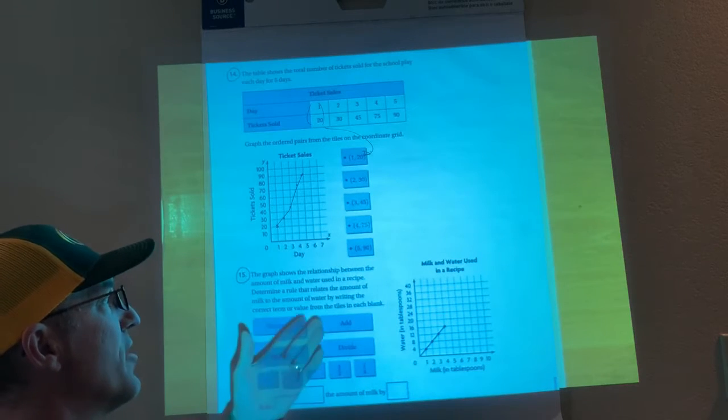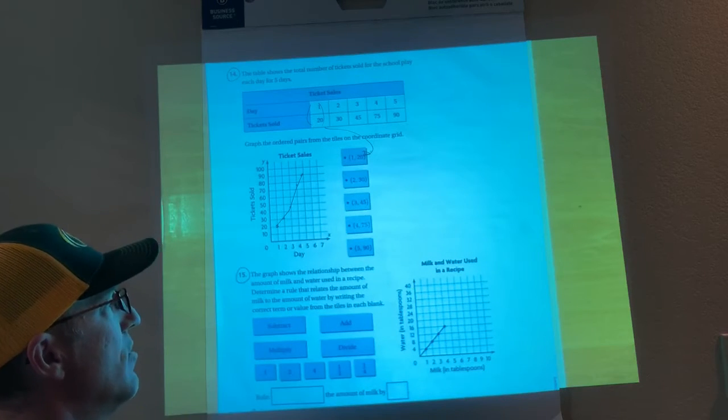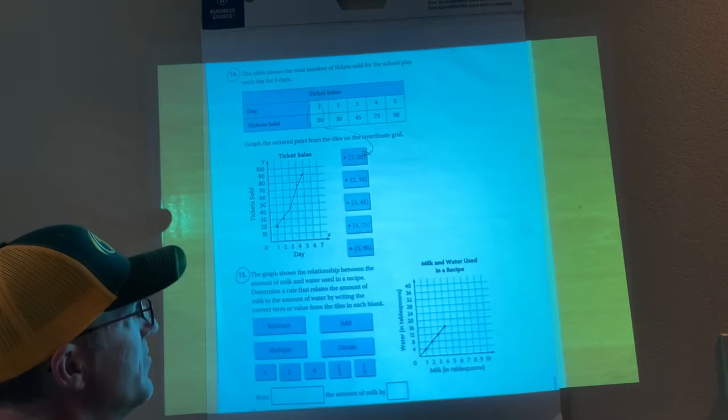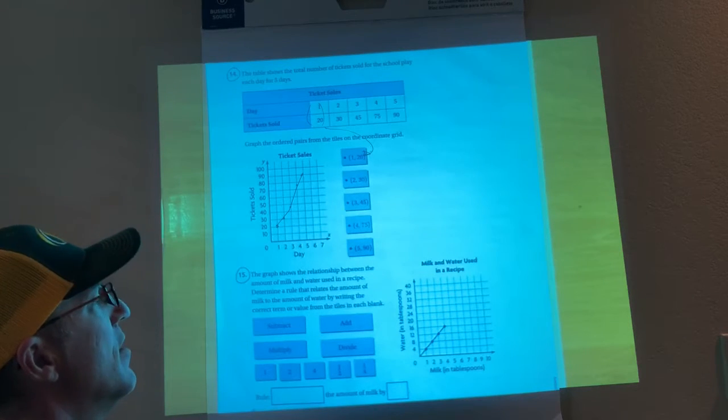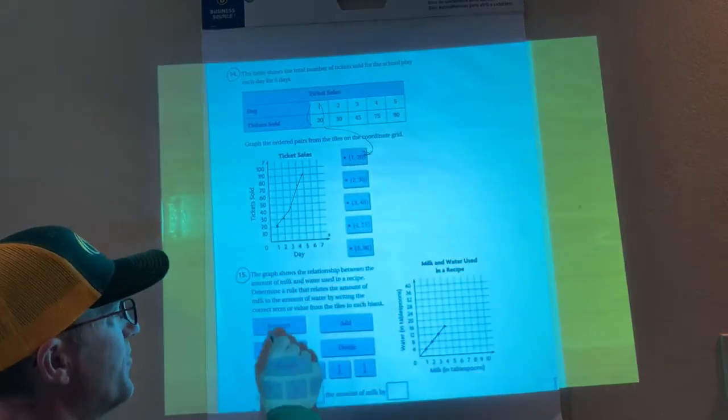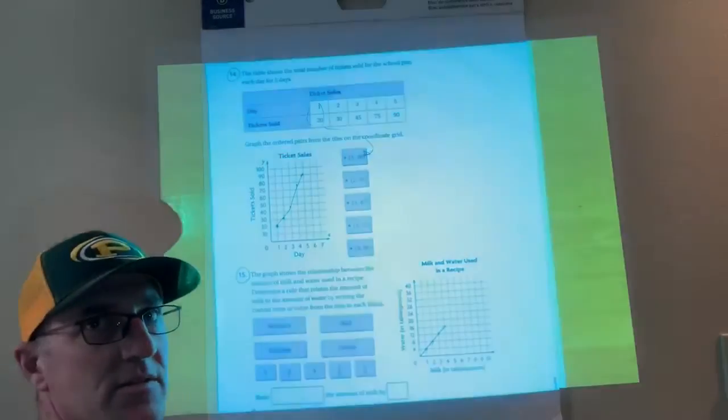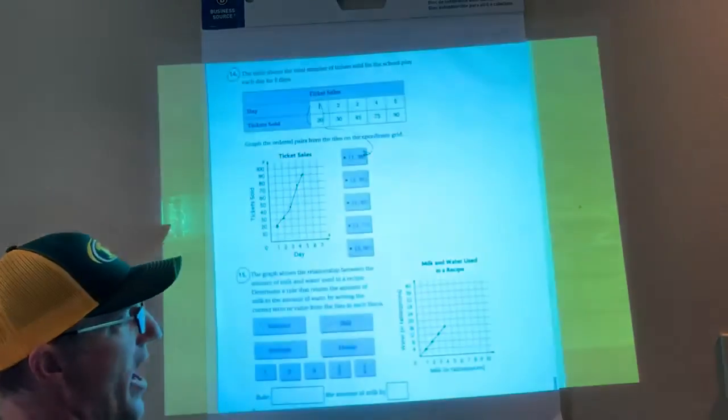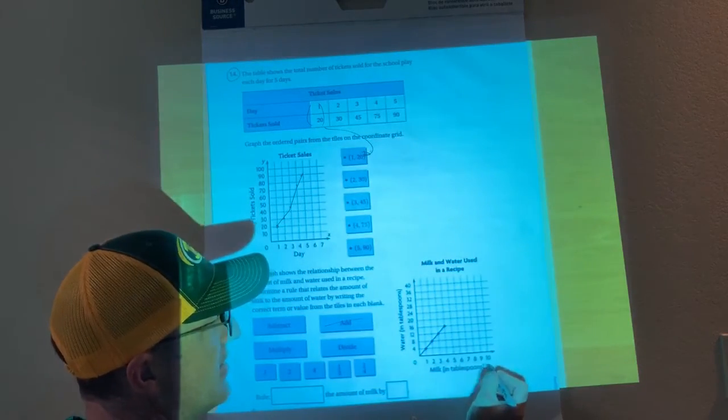Determine a rule that relates the amount of milk to the amount of water by writing the correct term or value in each blank. I know it's probably not gonna be either of those two because it's always been multiply or divide - we just gotta decide which. So I know that this is my x-axis and this is my y-axis. If I were to draw these out, my x would go on top and my y on the bottom. So this is milk.